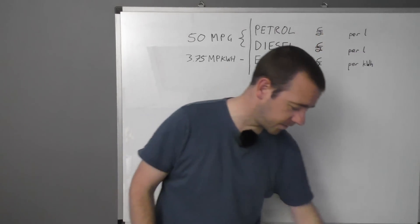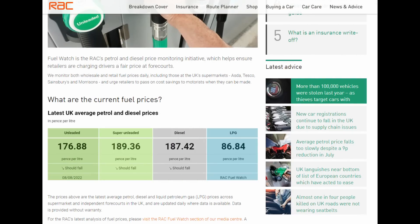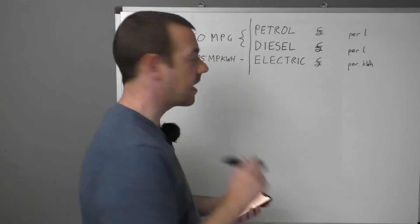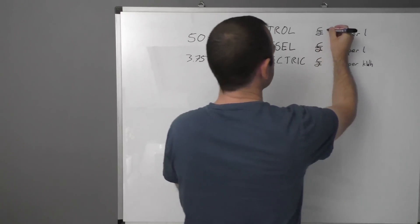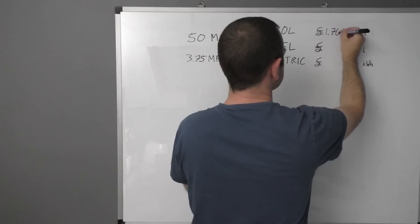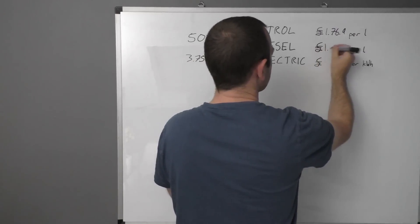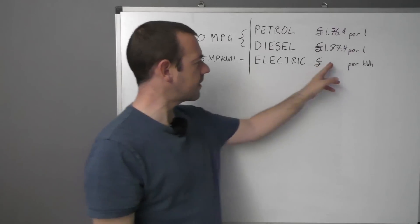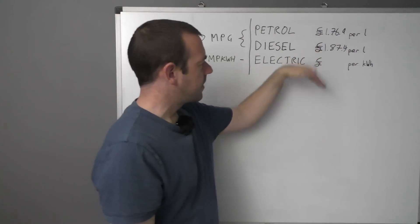We just need the price of fuel. For this I have gone on RAC's website, and they have something called the Fuel Watch, which gives you the average price of petrol and diesel in the UK on that day. So today, the average price of standard unleaded is £1.769, I'll round it off. Diesel, that is more expensive, £1.874. Now this, I'm going to leave blank for a second, because I need to figure out where the break-even point is.